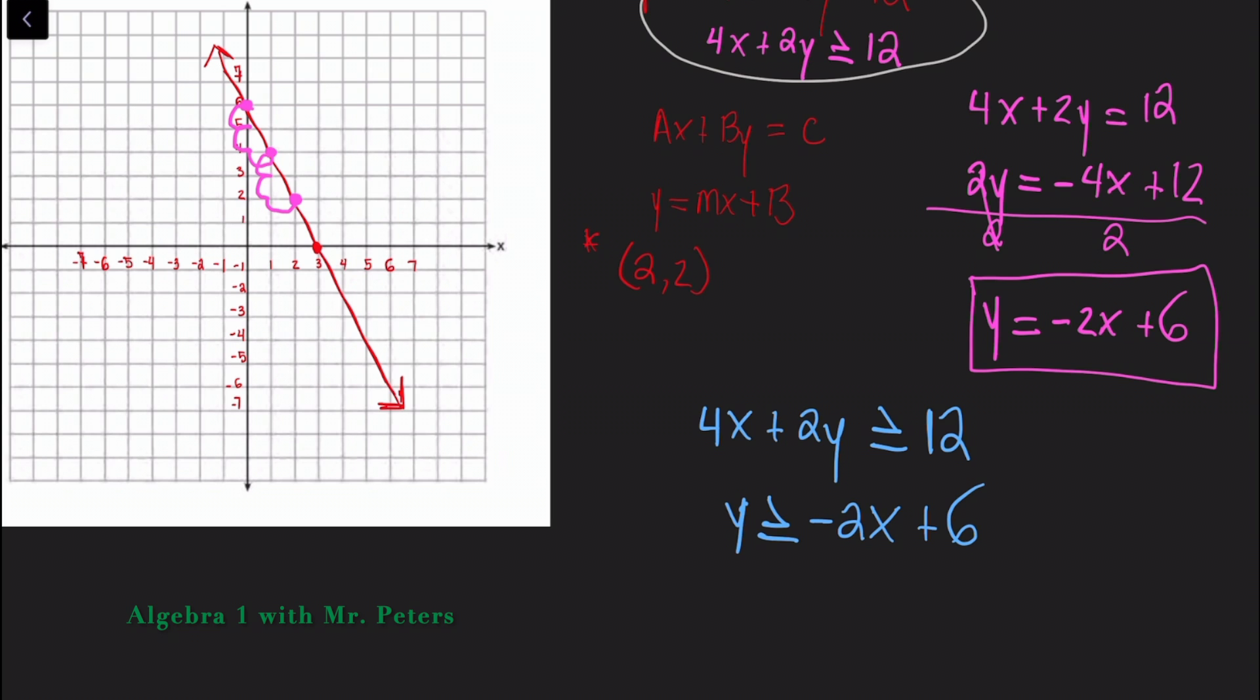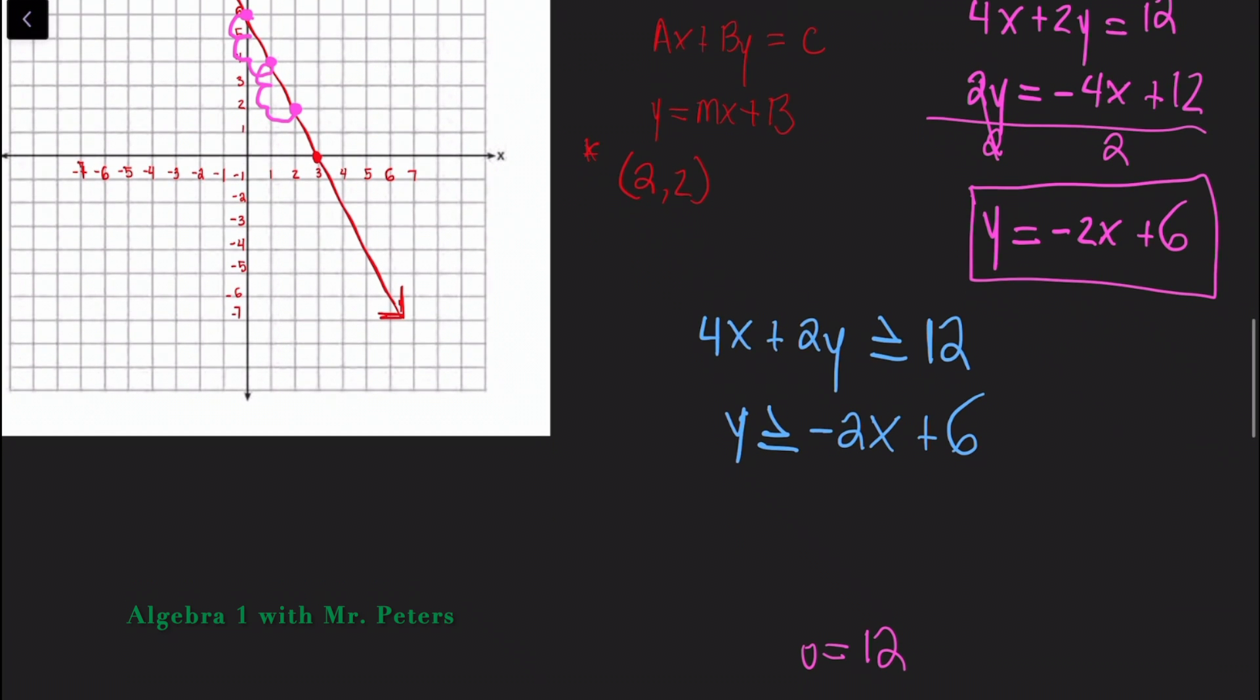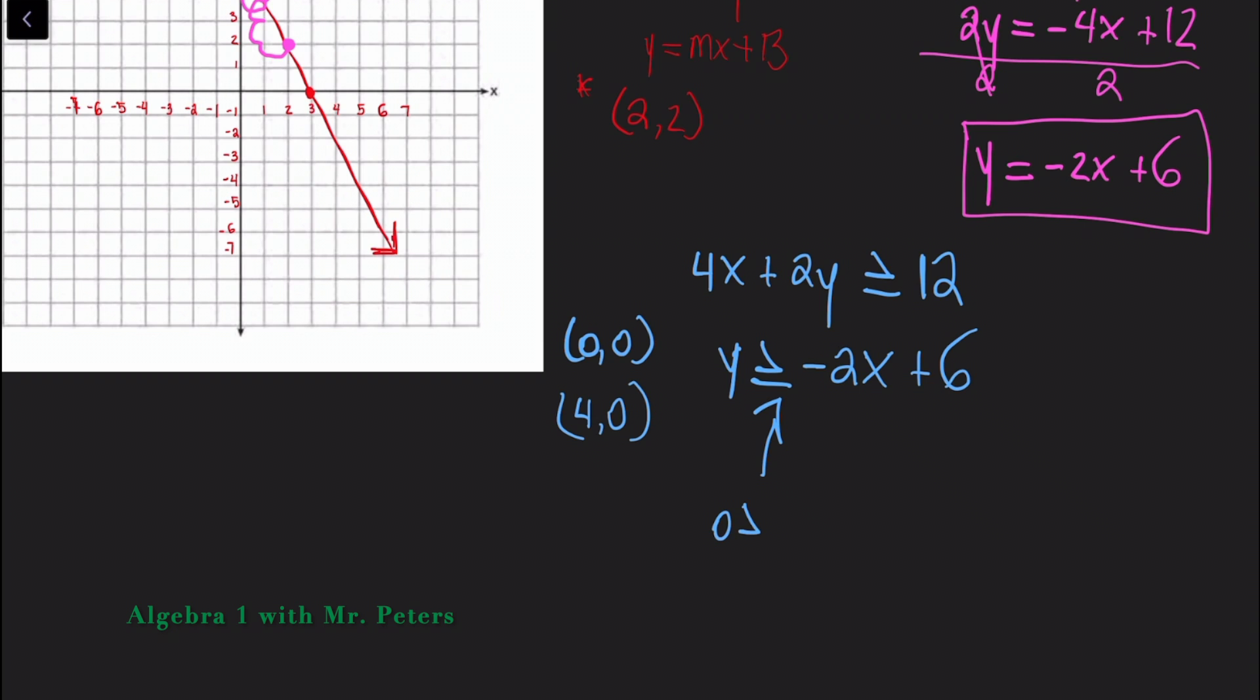And I asked you, is the point zero zero a solution? Now understand that when we're talking about shading linear inequalities, the point does not have to fall on the line. It could also fall in the shaded region, especially if it's or equal to inequality. So let's say I use the point zero zero. I want to know does that fall in the shaded region? So we're going to plug it into this equation. So now we're saying zero is greater than or equal to negative two times zero plus six. So I know zero is greater than or equal to six. No, that's wrong. So wherever the point zero zero is, I do not want to shade in that region because it's not a true statement.